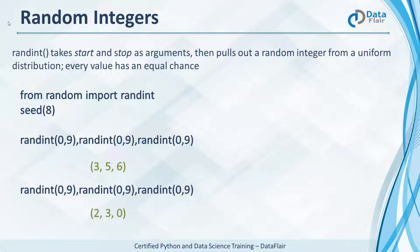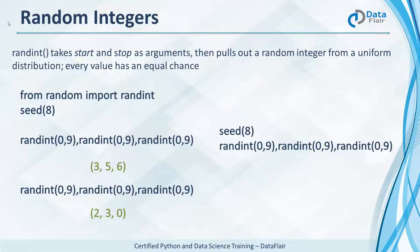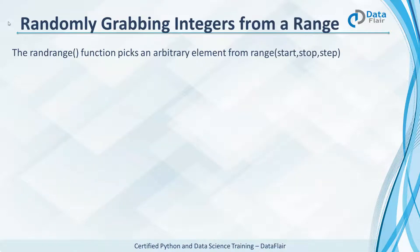Running it again gives us 2, 3, and 0. But if we initialize the seed again before printing the 3 values, we get 3, 5, and 6 again. When returning a random integer, randint includes both the endpoints of the interval.